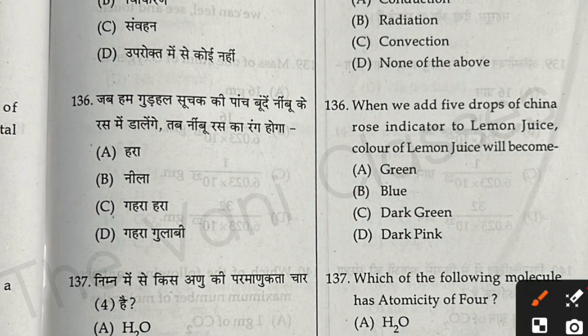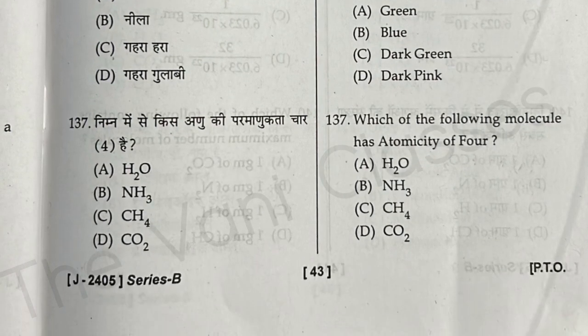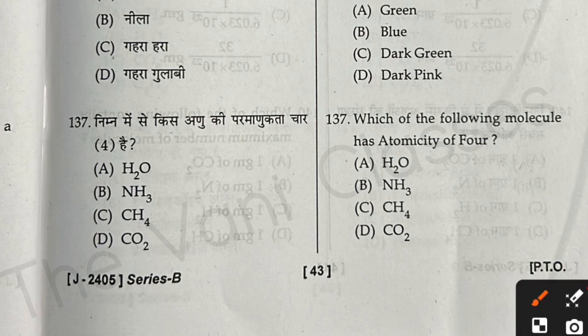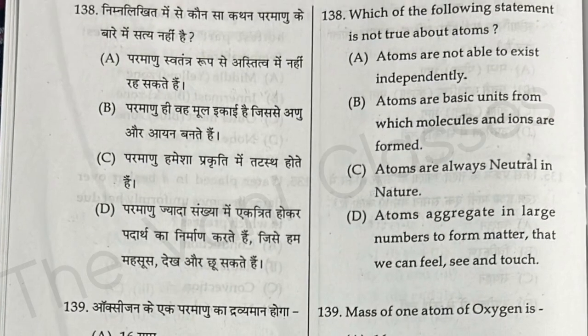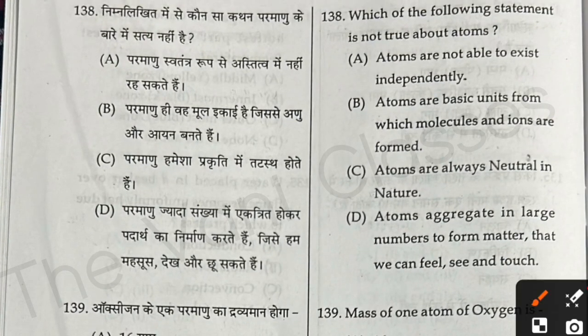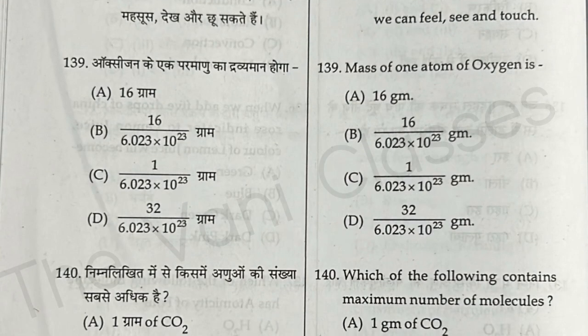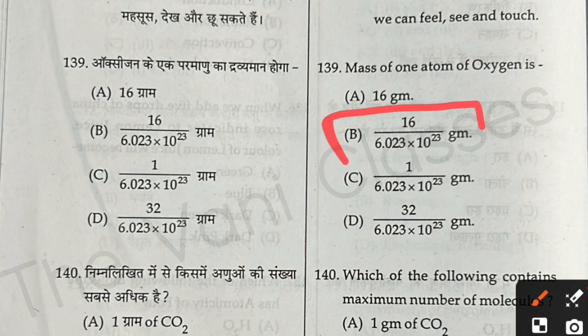Question 136: When we add 5 drops of China rose indicator to lemon juice, the colour becomes dark pink — option D. Question 137: Which of the following molecules has an atomicity of 4? The right answer is option B, NH3. Question 138: Which of the following statements is not true about atoms? The answer is option A — atoms are not able to exist independently.